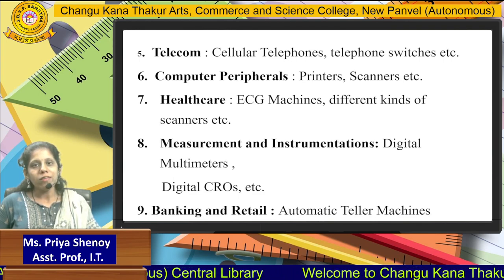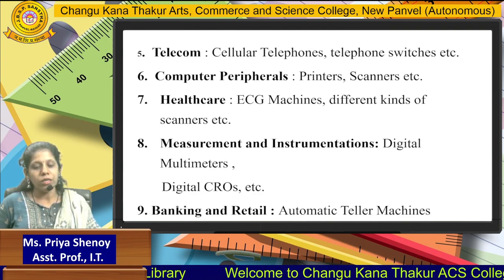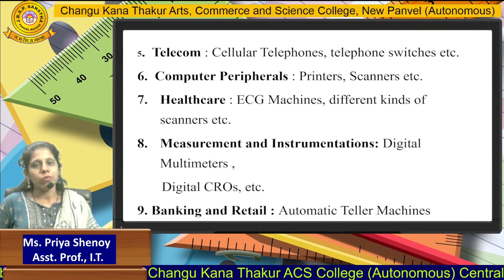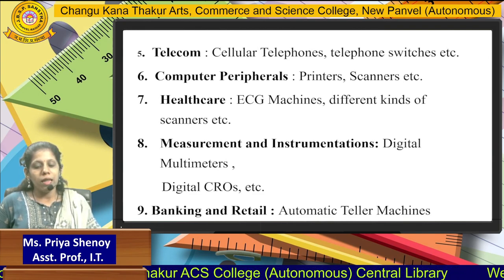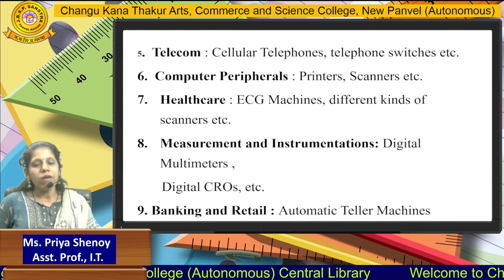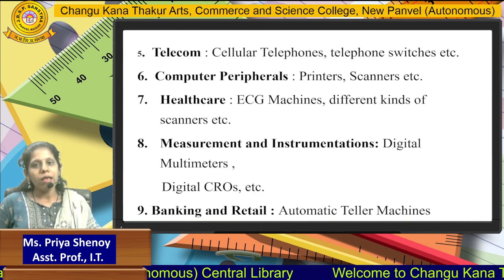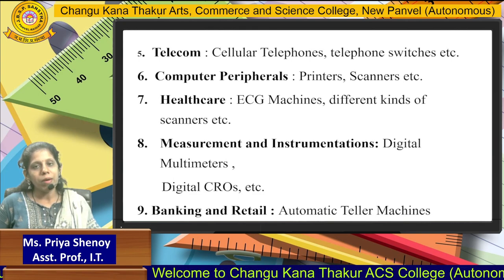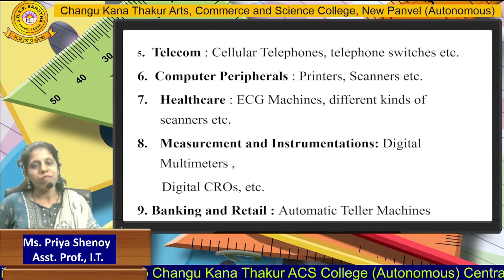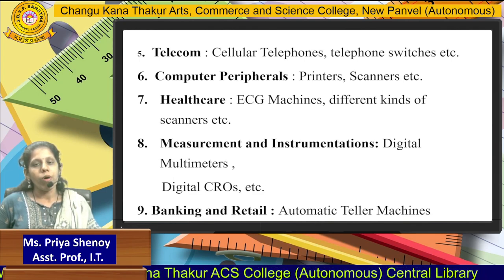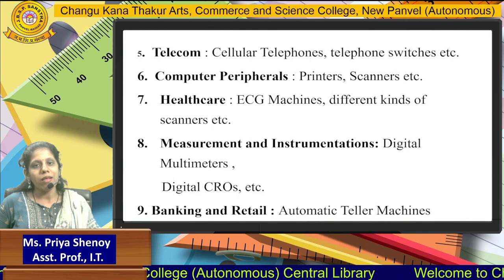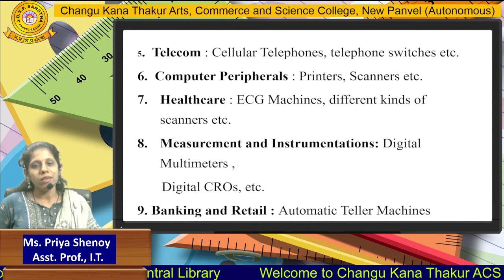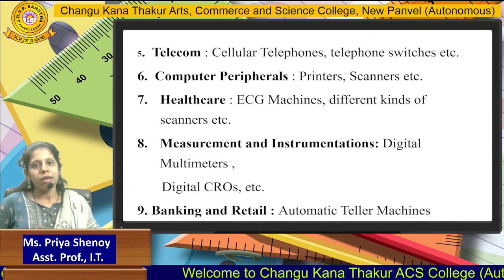Even in measurement and instrumentation such as digital multimeters, digital CROs, embedded systems are being used. In the banking industry, embedded systems are used for ATM machines. ATM machines are designed to perform specific tasks such as withdrawal and deposit of cash, displaying the balance and so on. Only that task for which it is designed, the code which is included in it — only that task it is able to perform.